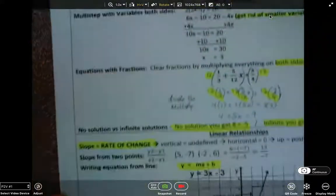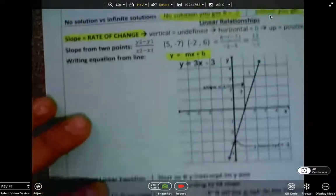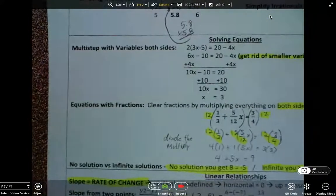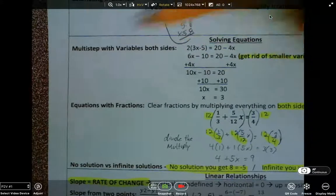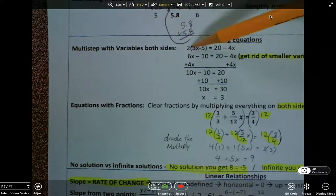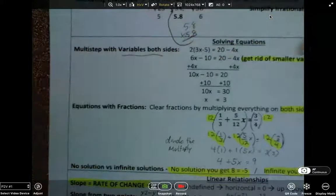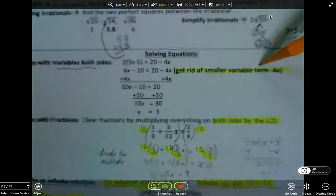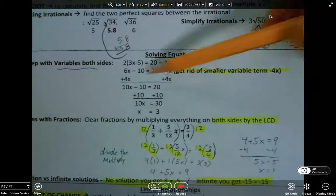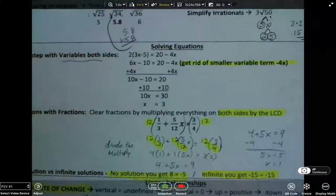Then in another unit, about in October, we learned about solving equations. We had multi-steps where you had to distribute and combine like terms, and if there was variables on both sides, you'd always get rid of the smaller variable first. So see here we added 4x to both sides and then did our thing from there.